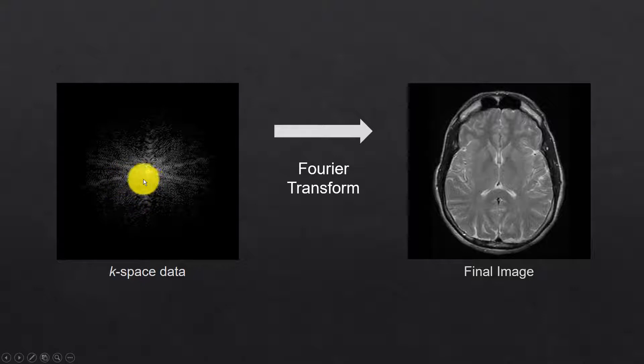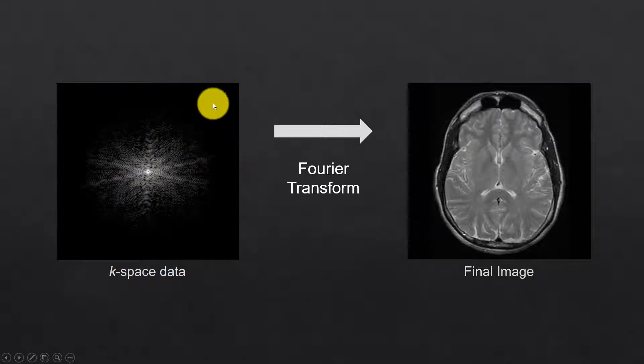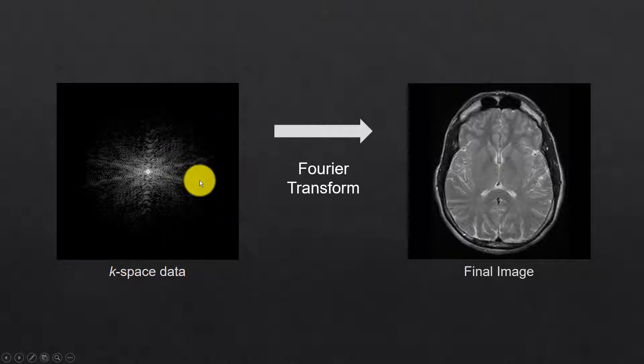The data at the center of k-space contains information on contrast, and at the periphery there is information about edge definition.